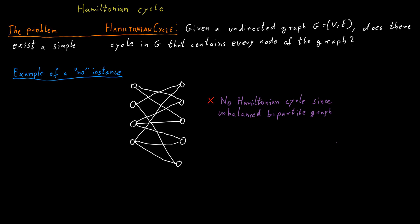So this is an example where we know there is no Hamiltonian cycle—bipartite graphs with an odd number of nodes—but in general this can be quite difficult to see.